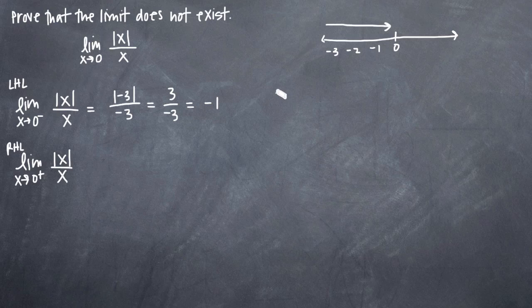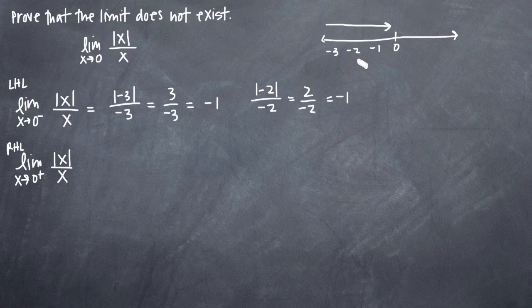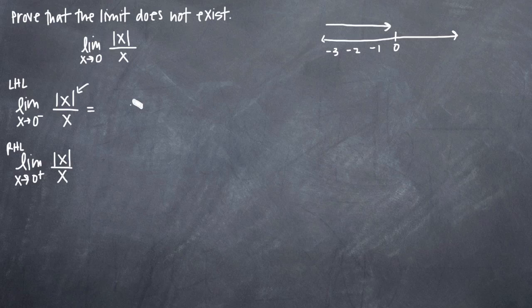If we plugged in negative two, we'd get the absolute value of negative two divided by negative two, which gives us two over negative two — again, negative one. What we start to realize is that no matter what value we plug in, because we're always plugging in a negative value, the absolute value bars will always turn that negative value into a positive value. We'll have a positive over a negative, the same value, so we'll always end up with negative one. We can simplify this: x divided by negative x always equals negative one.